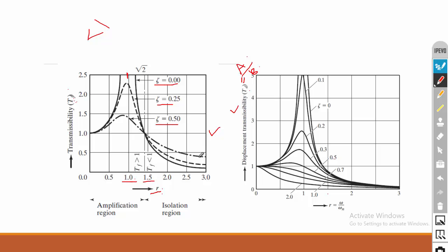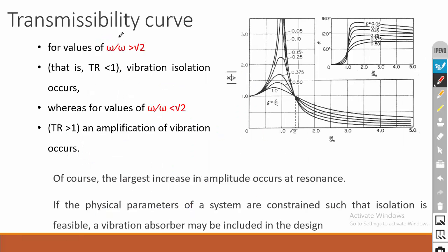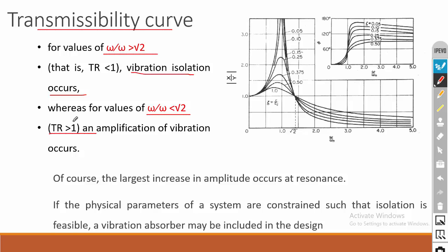Points to note from the transmissibility curve: for omega/omega_n greater than 2, isolation occurs, meaning the transmissibility ratio is less than 1. For omega/omega_n less than 2, amplification occurs — the generated force is amplified and transmitted to the foundation, giving a transmissibility ratio greater than 1. At resonance, the transmissibility ratio will be very high.